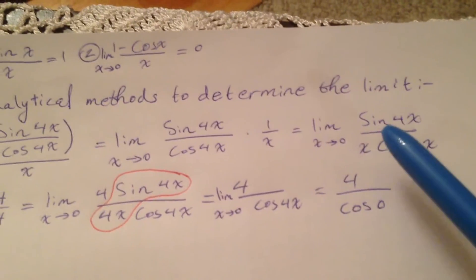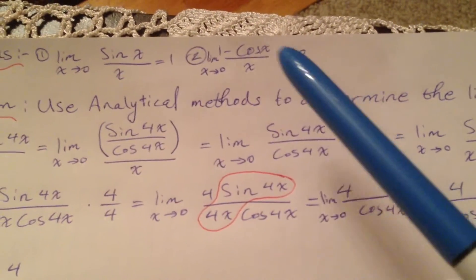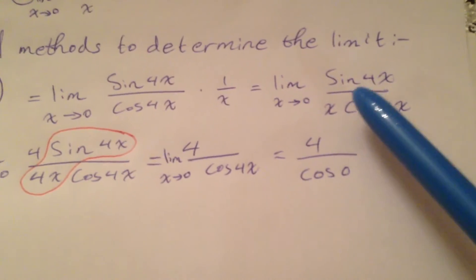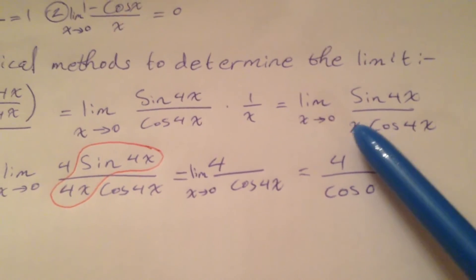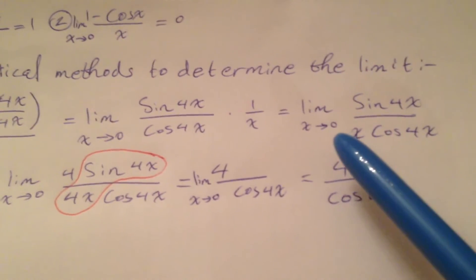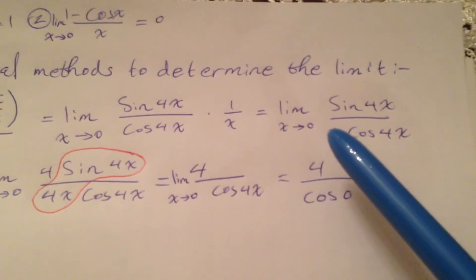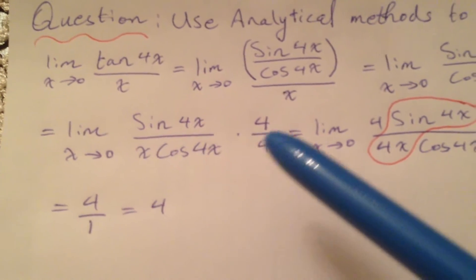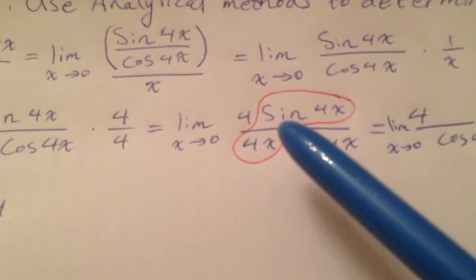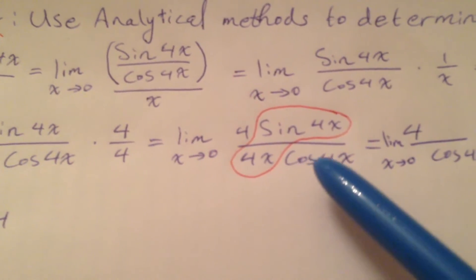Now, how can we get from here to one of those terms? Since we have 4x in the numerator, we need 4x in the denominator. The plain x is a problem because x is approaching 0 and we cannot plug it in — we'd have infinity. So we multiply by 4 over 4 to get 4x in the denominator, giving us limit x approaching 0 of 4·sine(4x) over 4x·cosine(4x).